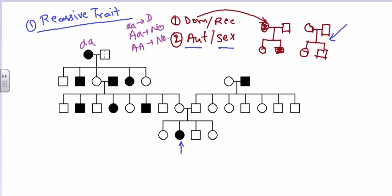This diseased individual gets genotype aa. This unaffected individual could be Aa or AA — we don't know yet. In the next generation, infected individuals get aa. Unaffected individuals get Aa. If we assign Aa to this male, then these are the resulting genotypes in the second generation.